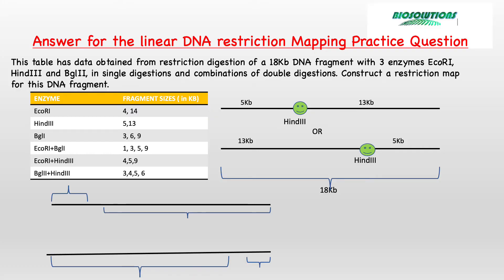Hopefully you tried to solve the problems I gave you as a practice question in the last tutorial. Here is my answer. HindIII and EcoRI enzymes produce two fragments each. For a linear DNA, if two fragments are produced, that means the enzyme cuts the DNA only once. Here we place the HindIII site first, and there can be two combinations — either this way or this way.